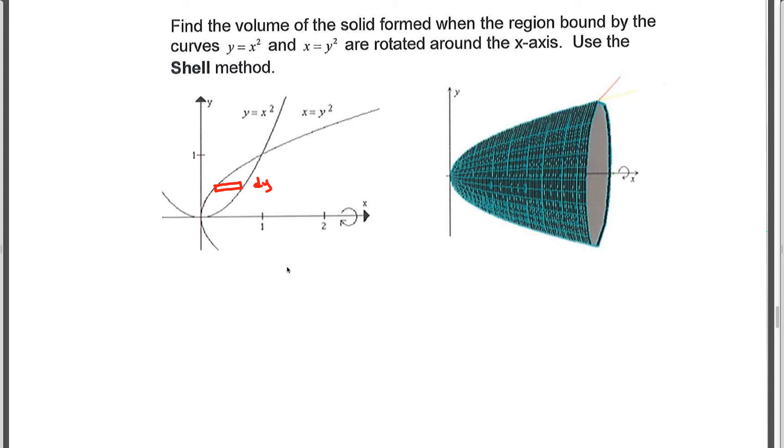Because I'm using shell method, I know I need three things. I need the radius, I need the height, and I need the thickness of each of my shells. Well, the thickness is dy. The distance from the rotational axis to the rectangle is the radius. That's y. And the height of each rectangle is the right-hand curve, which in this case is x = √y, minus the left-hand curve, which is y². Again, making sure they're both written x equals because we need y as our variable. And now we just use the formula.